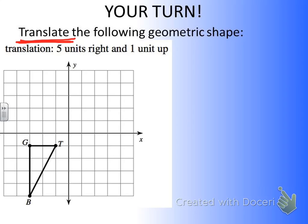So I'm going to start at point G, and I'm going to go one, two, three, four, five units to the right. Then from there, I'm going to go one unit up, plot my point, and there is point G.